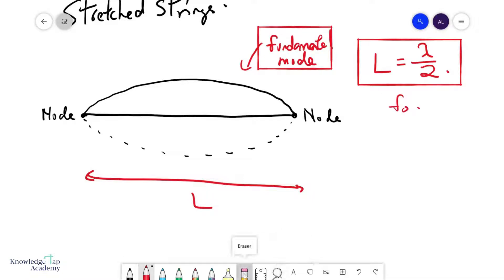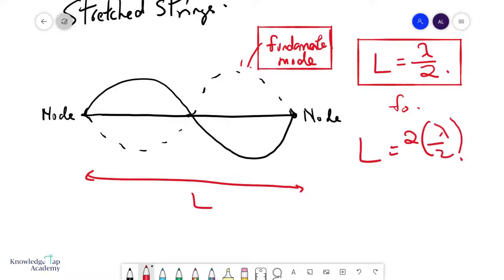Now is this the only way to form a stationary wave? Absolutely not. So keeping in mind that I need to have nodes on both ends, notice that another way I can do this is to go something like that, and my wave just goes up and down like this. Now in this case, notice that L equals to two times lambda over two. That's one, that's two.